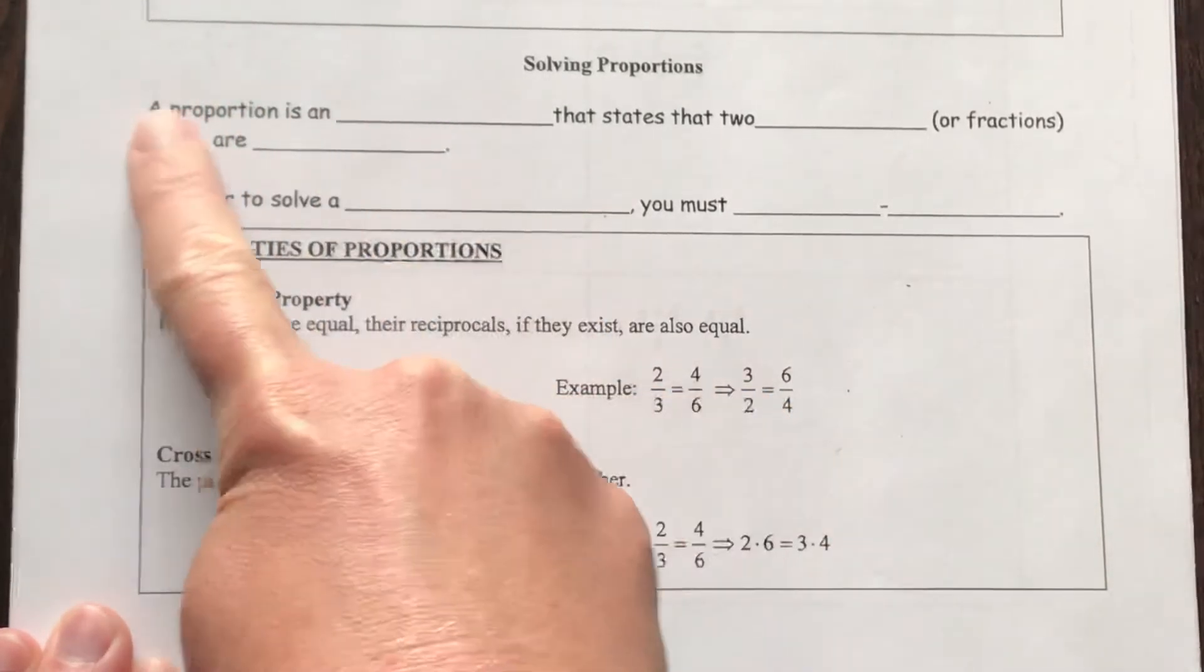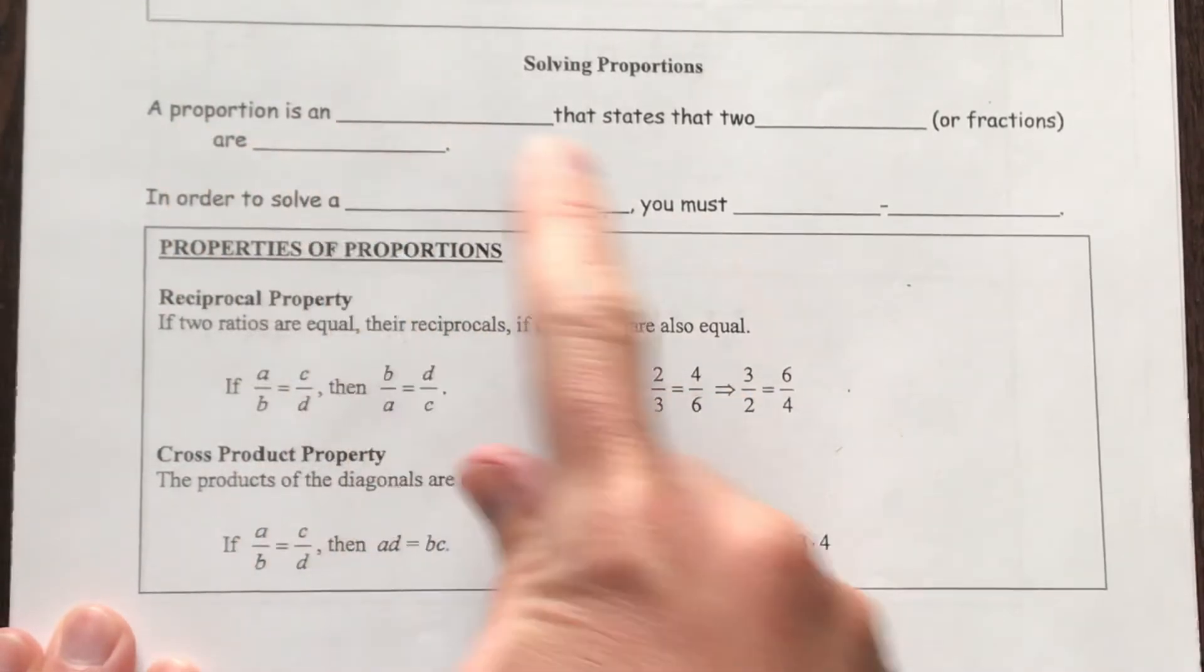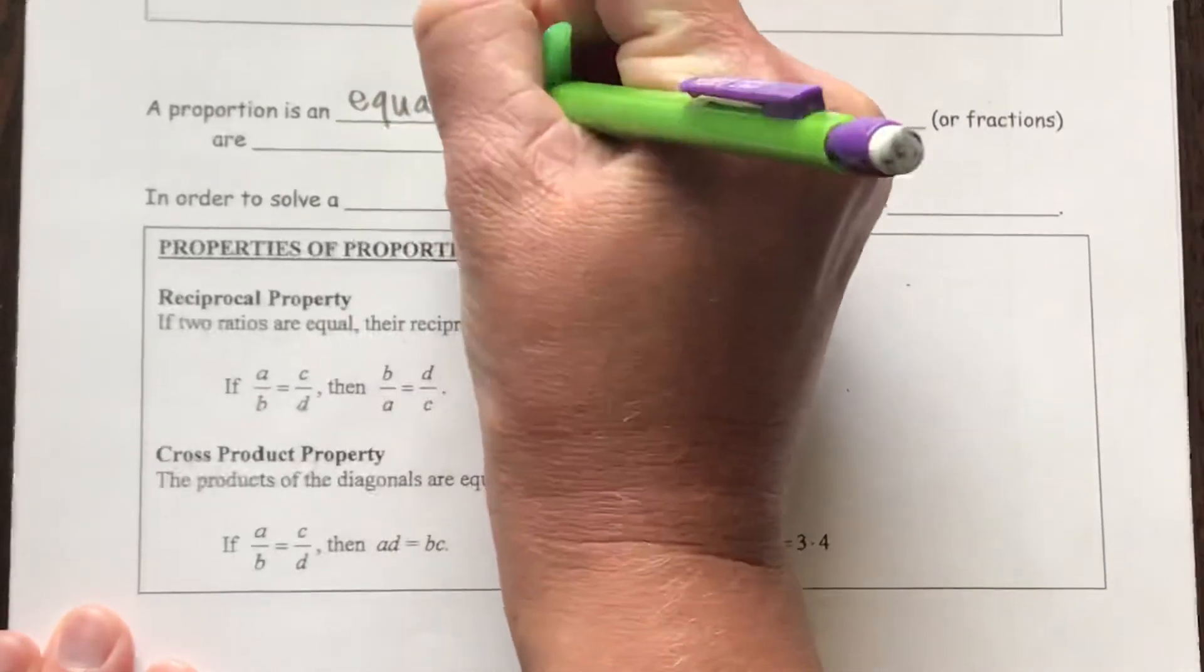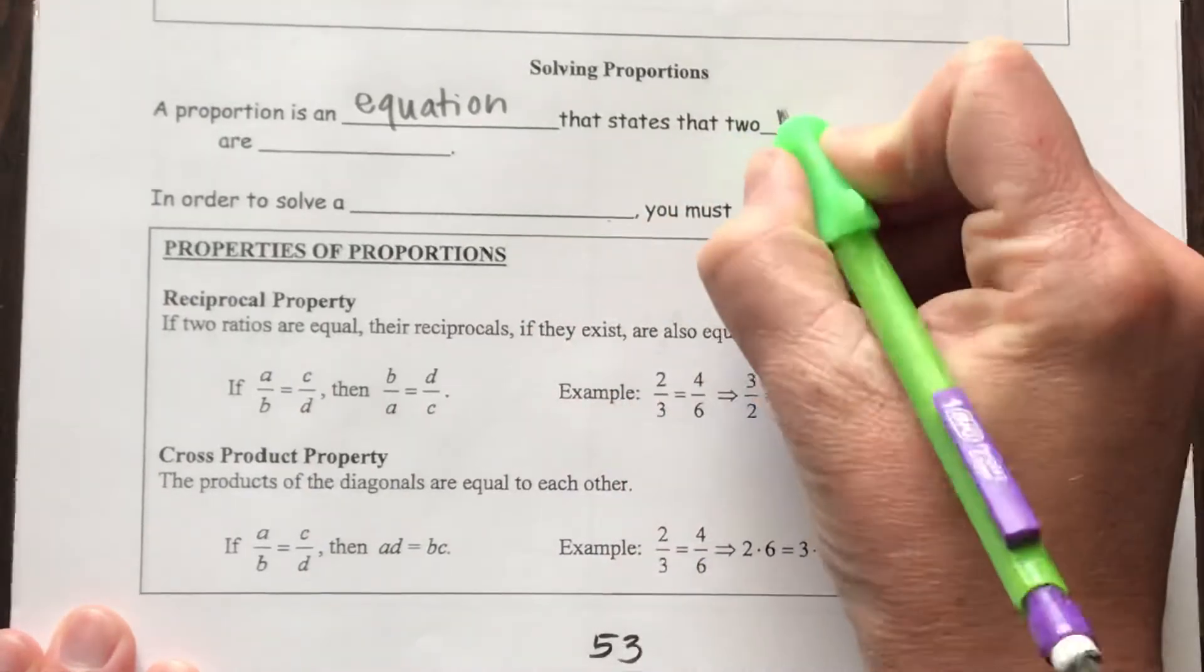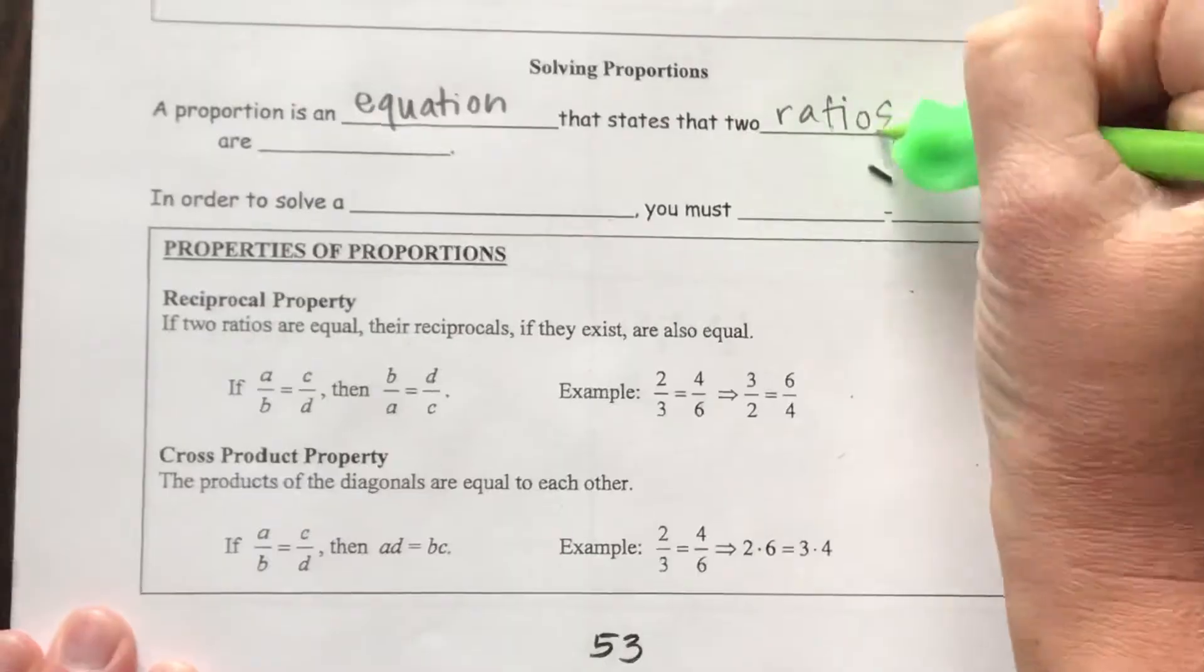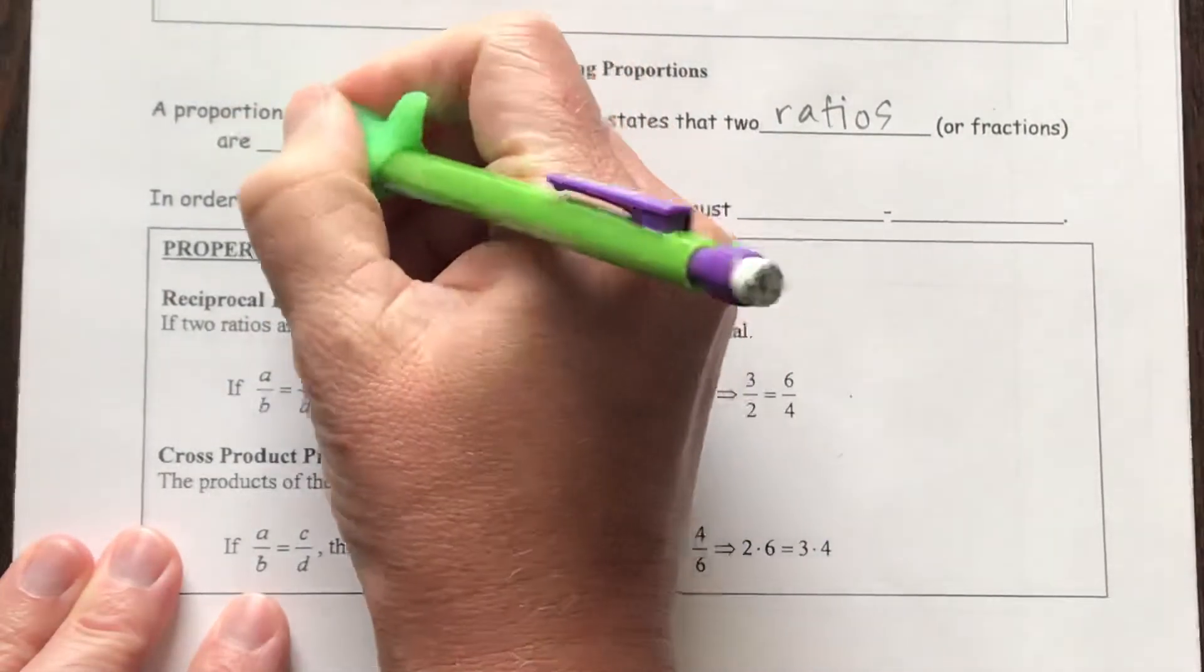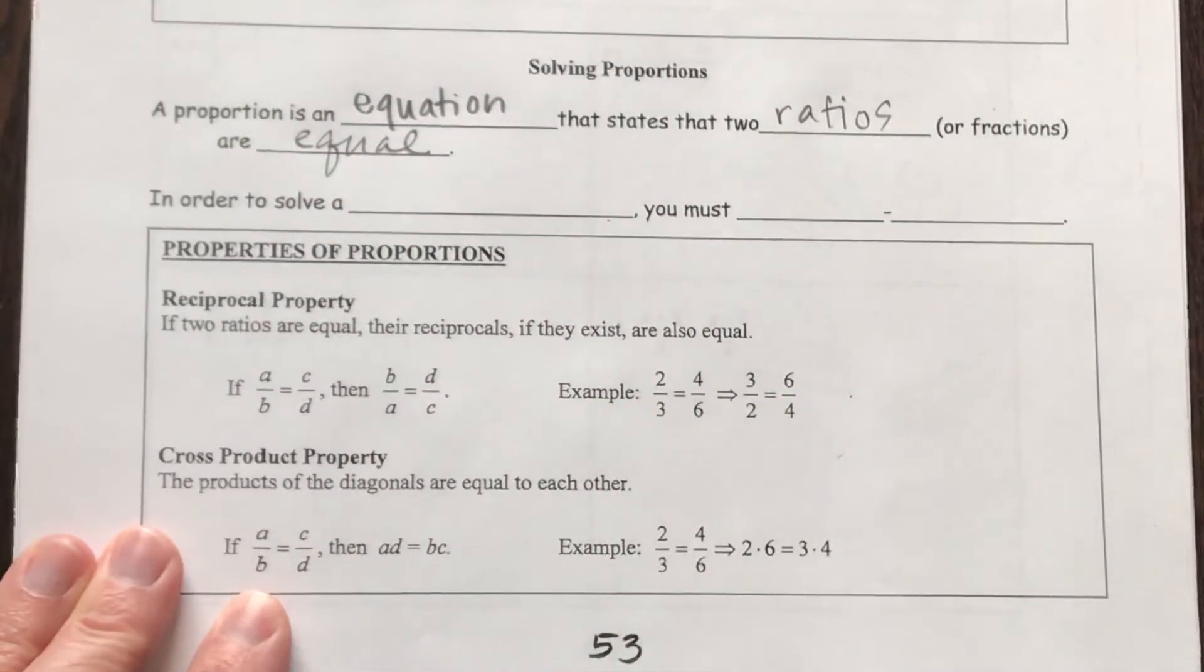The first thing that I want to do is fill out some of these blanks, and it says a proportion is an equation. And that equation will state that two ratios, or fractions, are equal. So what you're going to see is a fraction equal to a fraction.